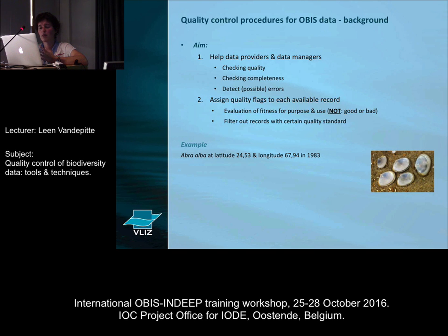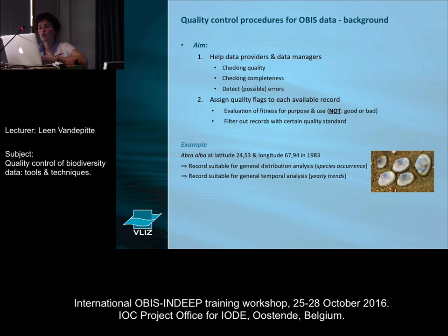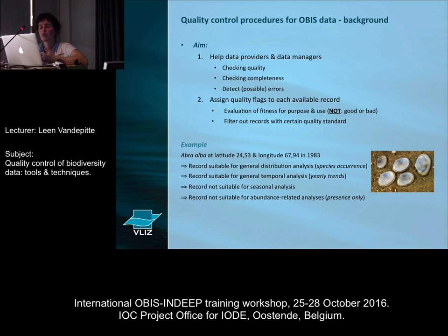So we have a record, a distribution record of a mollusk at a specific latitude and longitude and a specific year. We can use this record for a general distribution analysis because it's a species occurrence record. It can also be used for a general temporal analysis because it has a year. It cannot be used for seasonal analysis because we don't have any more information than just the year. And it can also not be used for abundance related analysis because it's a presence only record. It's not because it's a presence only that it cannot be used for any of the other things. That's what we mean by we're not tagging a record as being good or bad — we're just giving an indication of the fitness.